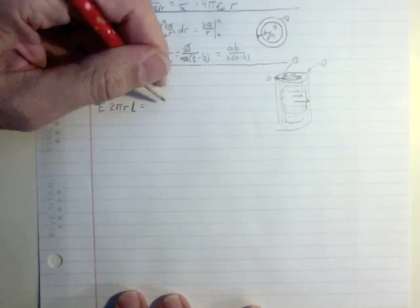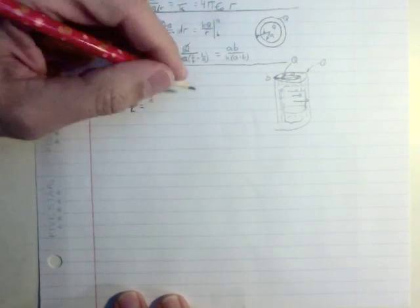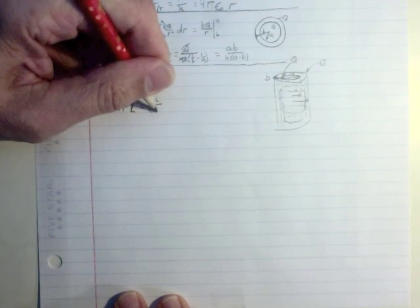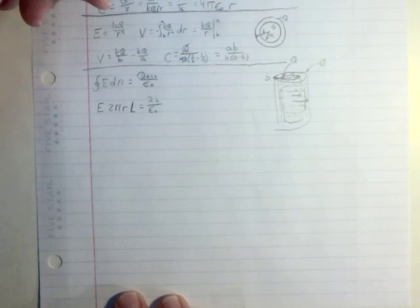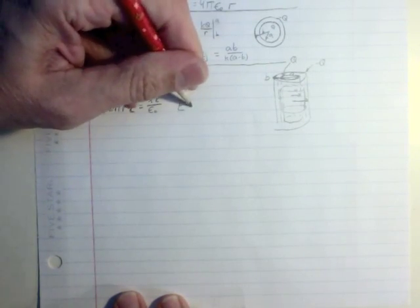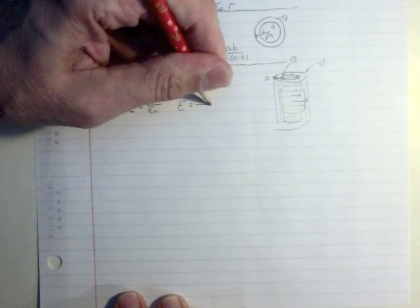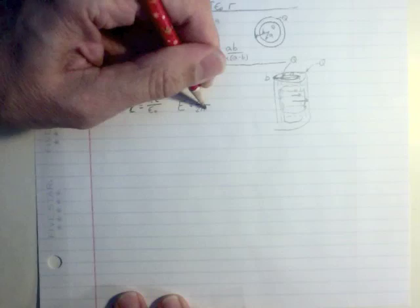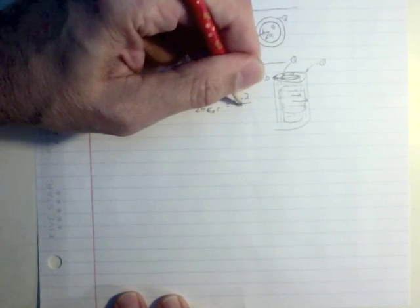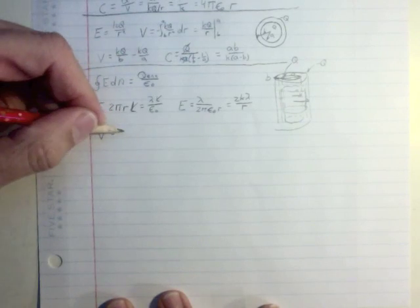And then Q enclosed is going to be lambda, I'll call that my linear density, times whatever the length is divided by epsilon zero. The L's cancel. And so my electric field is just lambda divided by 2 pi epsilon zero r, which is the same as 2k lambda over r.